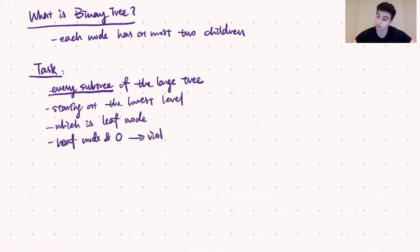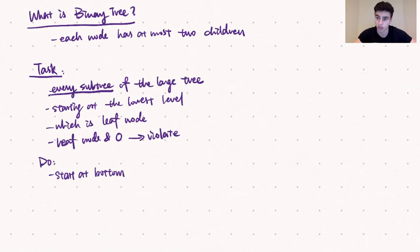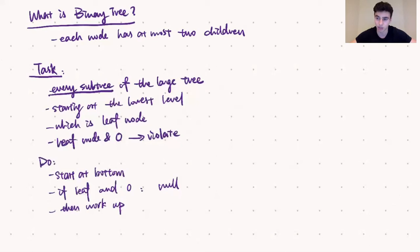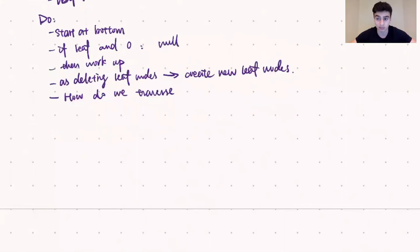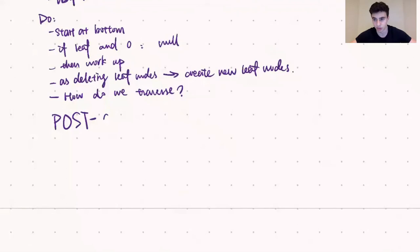We're going to start at the bottom of the tree and check if there's a leaf node that contains a zero. If there is, we replace that leaf node with null, and as we do that we work our way up the tree. By doing this we'll inevitably reach every subtree that only contains zeros, because as we delete leaf nodes and replace them with null, we create new leaf nodes. So we need to consider how to traverse the tree bottom-up such that we touch all leaf nodes before moving to other levels.